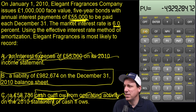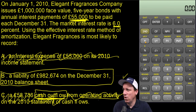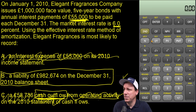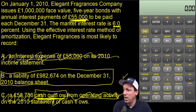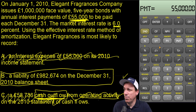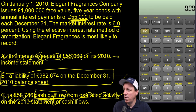Let's get the calculator anyway. Clear everything out — clear time value, clear work, make sure we're at end of period. This is a $1 million bond, so FV equals one million. The bond pays $55,000, which goes into the payment. The interest rate per year is 6% — that's the market rate. It's a five-year bond, so N equals 5. Payments per year: one.